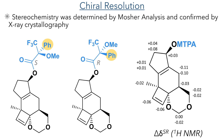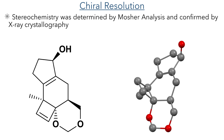The researchers used Mosher analysis to determine the stereochemistry of the reduced compounds. This technique uses alpha-methoxy alpha-trifluoromethyl phenyl acetic acid, also known as Mosher's acid. This acid is commercially available as both enantiomers and forms two diastereomers when reacted with the compound to form an ester. These two products can be studied by NMR, and by analysing the difference in chemical shifts between the compounds generated using the R and S enantiomers, it is possible to deduce the stereochemistry of the compound. Fortunately, they were also able to crystallise one of the products and use X-ray crystallography to confirm the stereochemistry, which shows the hydroxyl group on the same face of the molecule as the cyclobutene ring.